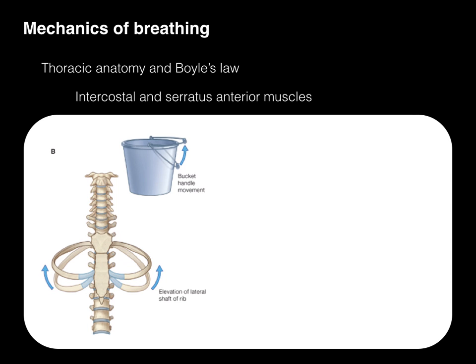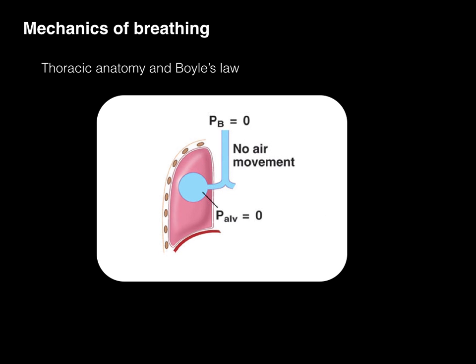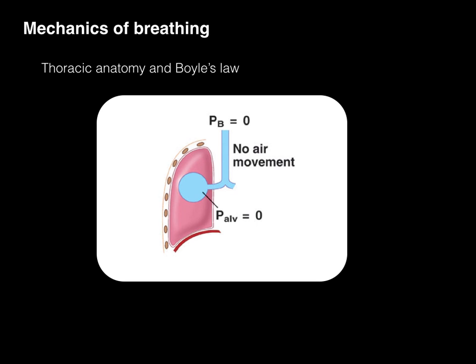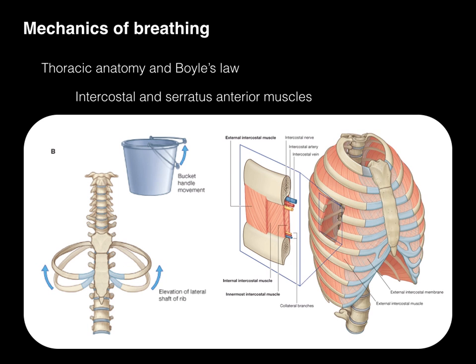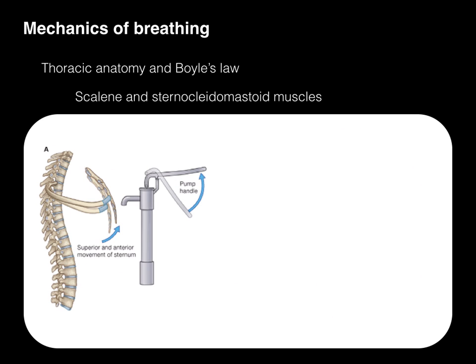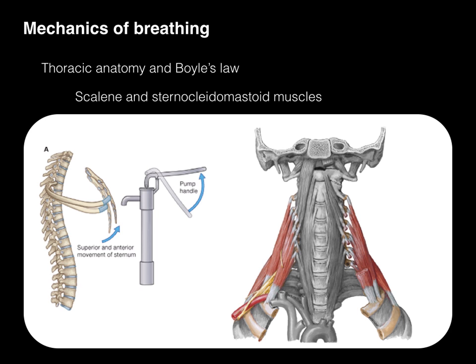Other muscles also contribute to breathing. The diaphragm increases lung volume in the superior-inferior axis when it contracts. When the intercostal and serratus anterior muscles contract, they increase lung volume laterally by lifting the ribs up — like a bucket handle movement elevating the lateral shaft of the ribs. The scalene and sternocleidomastoid muscles act like a pump handle, moving the sternum superiorly and anteriorly, increasing lung volume in a superior and anterior fashion.